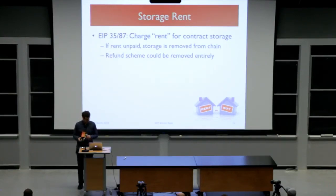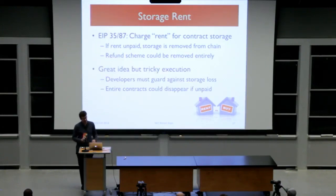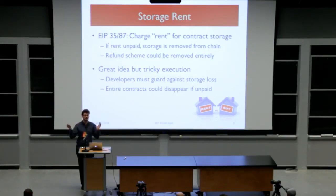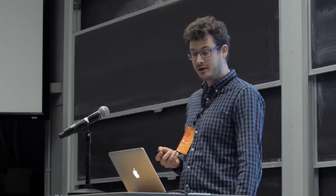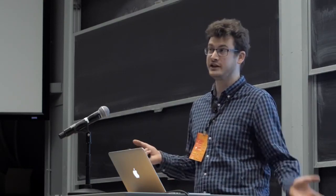In Ethereum there are proposals on how to do this in a smarter way. The general idea is to charge rent for contract storage - you pay for storage not only at a single point in time but over time, and if you stop paying, the storage gets destroyed. In that case you wouldn't need the refund mechanism anymore. But it's tricky to get right - as a smart contract developer you'd have to think about all the possible ways part of your storage might get deleted because rent wasn't paid. And this doesn't really work for the UTXO set, because there you really don't want things to just disappear.